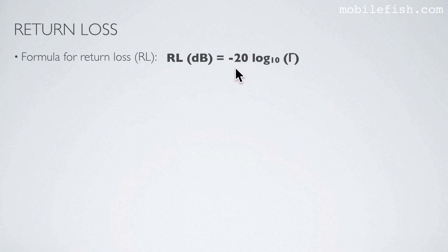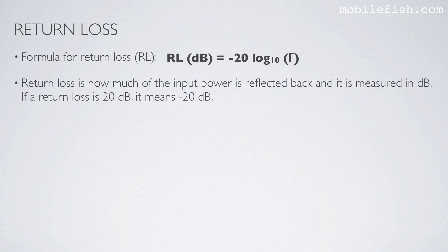Here is the formula to calculate the return loss. As input it uses the reflection coefficient. The return loss is how much of the input power is reflected back, measured in decibels. If a return loss is stated as 20 decibels, it means minus 20 decibels because it is a loss. Watch tutorial 5 if you want to know more about decibels.